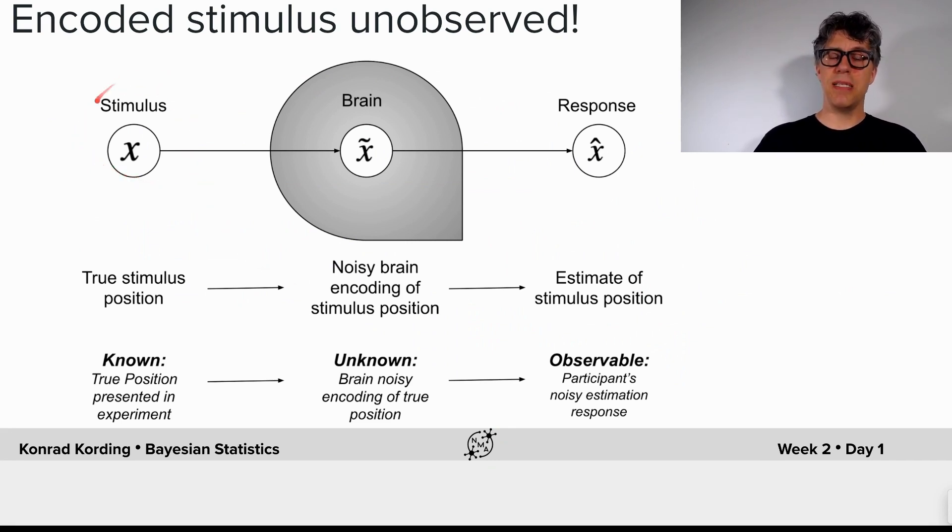What happens between the stimulus and the input of the brain is entirely unknown, and we cannot know that. So is it still possible to fit a model? And I should say this problem is super universal.